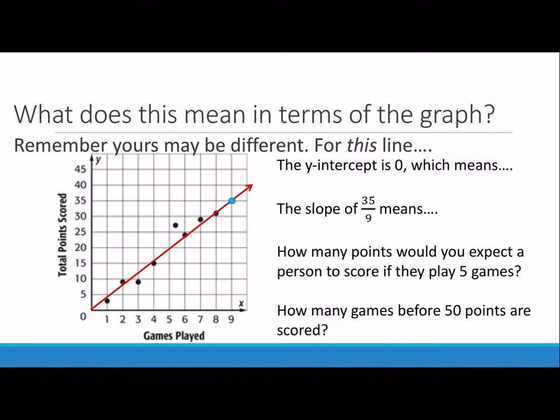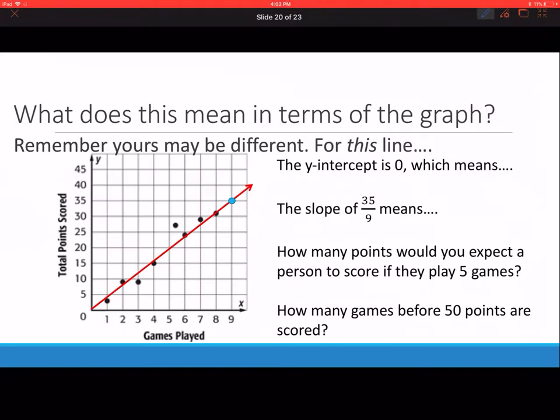The y-intercept of 0 means that with 0 games played, you have 0 points scored. That makes sense. If you haven't played a game, you can't score any points. The slope of 35 over 9 means that with 35 points, the average player has played 9 games. I looked at our labels and remember that y over x tells me about those parts.